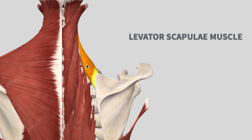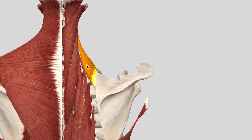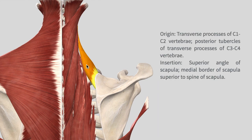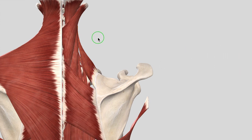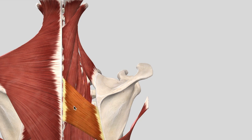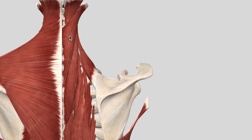Then we have the levator scapulae muscle. The origin is from the transverse process of C1 to C4, with insertion at the superior angle of the scapula and the medial border of the spine of the scapula. The action is to elevate and retract the scapula backwards. If we remove these three muscles, we can move on to the deep muscles of the back.